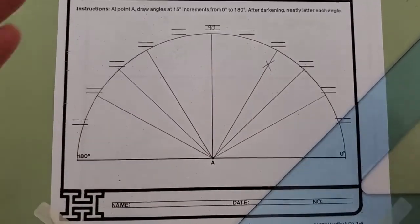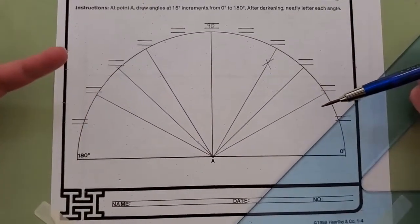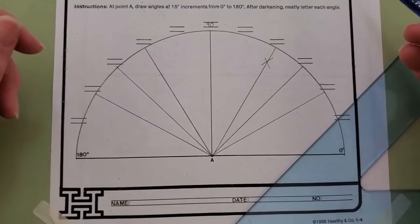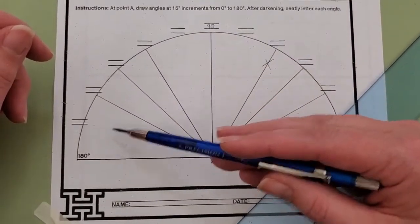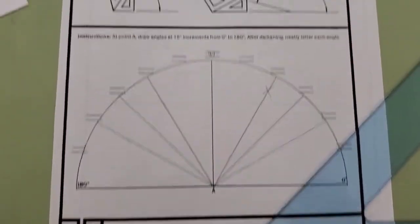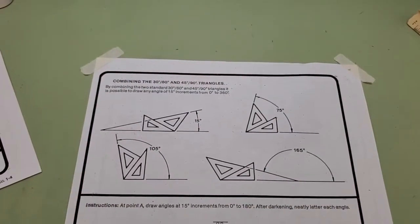So now I've got the simple angles to create. In order to create your 15, your 75, your 105, and your 165, they've given you some examples at the top of your page on how to do that.